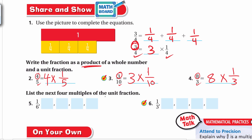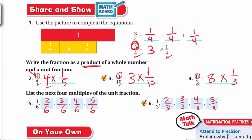Now list the next four multiples of the unit fraction. Starting with 1/6: add one more sixth to get 2/6, then 3/6, then 4/6, then 5/6. For 1/3: the next multiples are 2/3, 3/3, 4/3, 5/3, and so on. To summarize: write the numerator as the whole number and the denominator as the unit fraction. To find multiples, keep adding one more unit fraction each time.